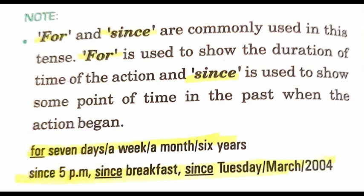For example: 'Aap doh ghanton se padh rahe ho' — you will say 'I have been studying for two hours.' Here, two hours is a duration, so we use 'for.' If you say 'I have been studying since 5 pm,' then 5 pm is the definite point of time when you started the action, so we use 'since.'